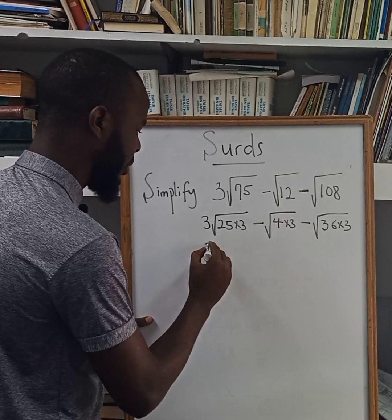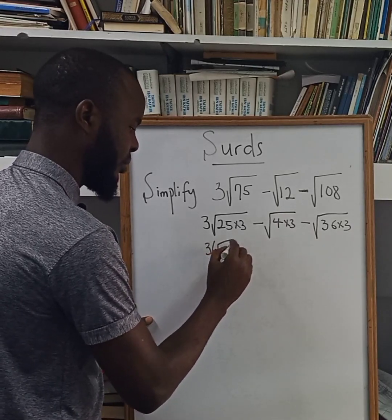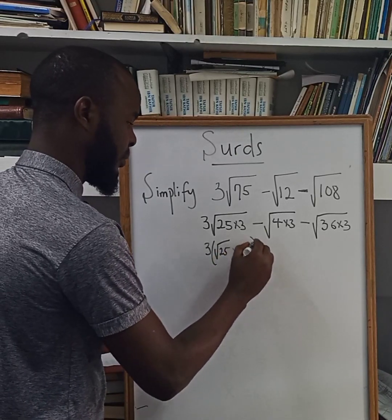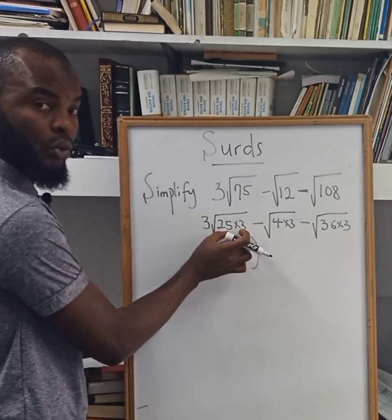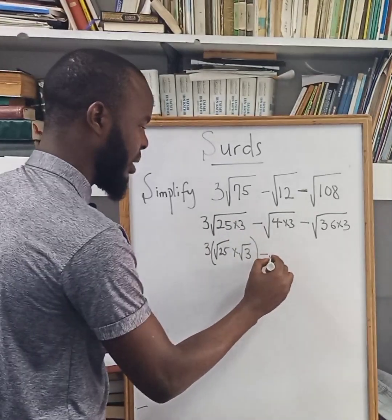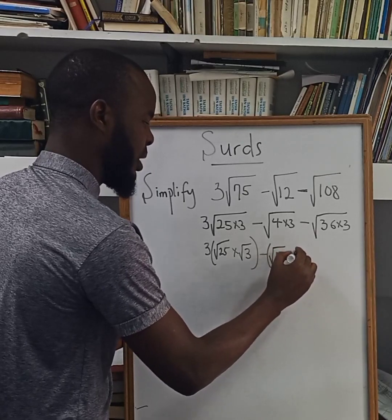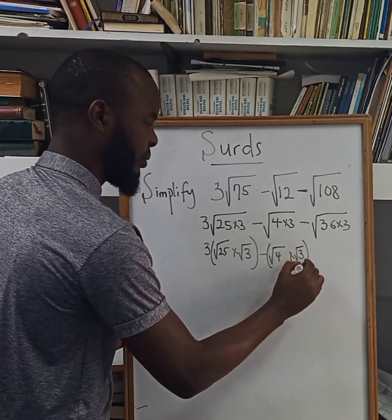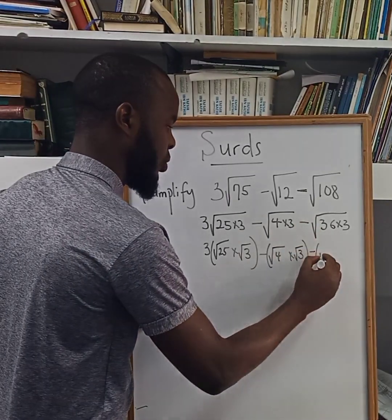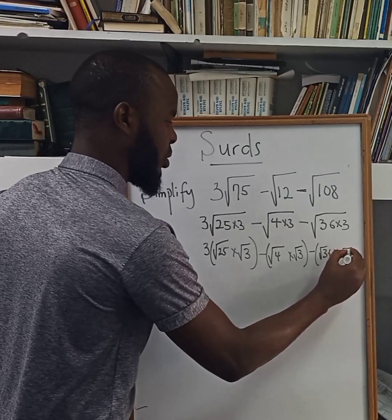Now, doing this, we have 3 times root 25 multiplied by root 3. You can split this into two separate roots. The same thing can be done to root 12: square root of 4 multiplied by the square root of 3. And lastly, the same is done to root 108: square root of 36 multiplied by the square root of 3.